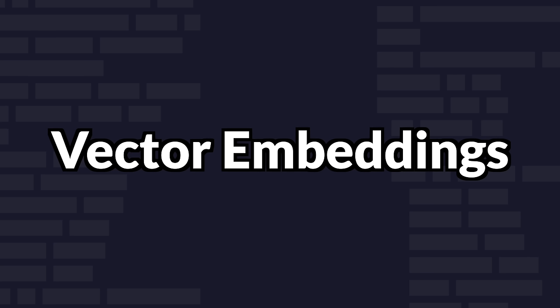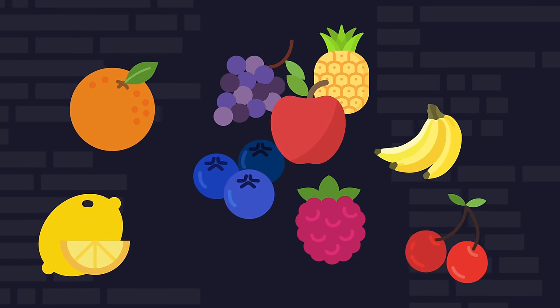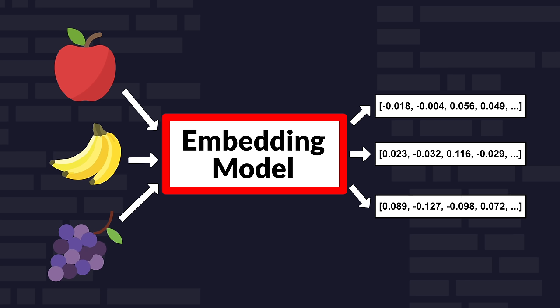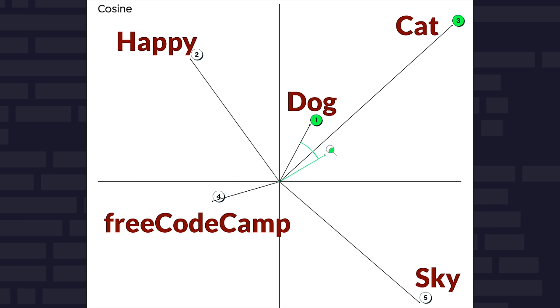So let's start by talking about vector embeddings. Imagine you have a lot of different objects, like fruits, and you want to organize them in a way that shows how similar or different they are. In the real world, you might sort them by color, size, or taste. In the digital world, we can do something similar with data, and that's where vector embeddings come in. Vector embeddings are like a digital way of sorting or describing things. Each item, like a word, image, or anything else, is turned into a list of numbers. This list is called a vector. The cool part is that similar items will have similar vectors.